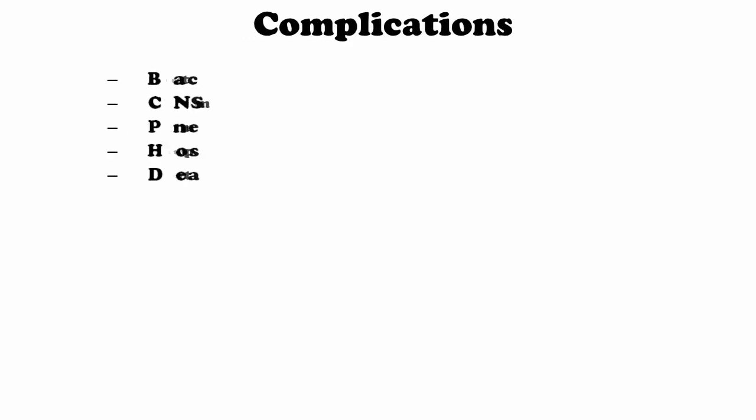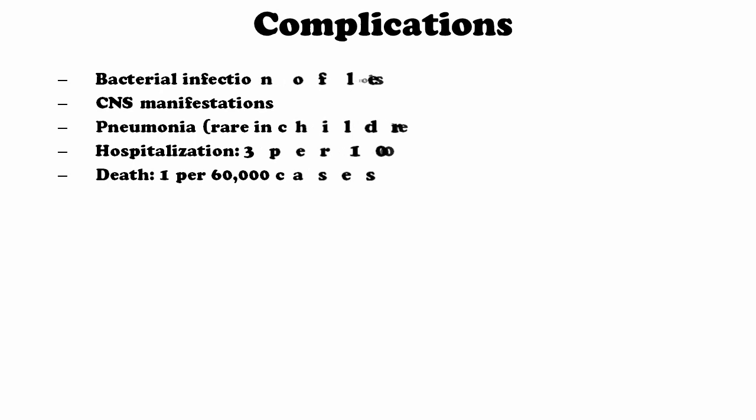Complications due to the disease include bacterial infection, CNS manifestation — that is, the central nervous system is affected significantly — and pneumonia, which is rare in children though it may happen. Hospitalization occurs in approximately 3 per 1,000 cases, and death occurs in approximately 1 per 60,000 cases.